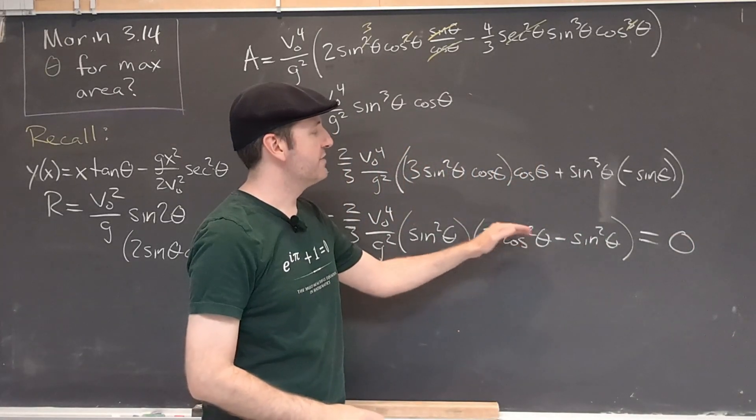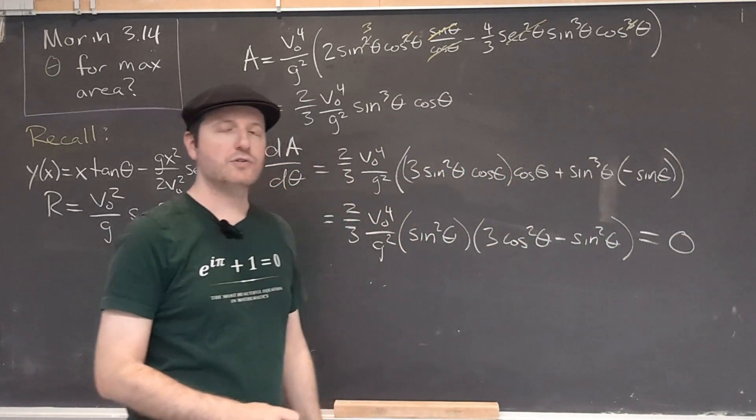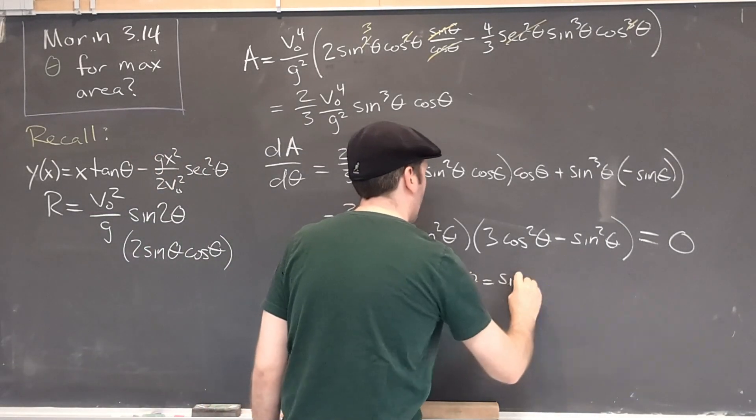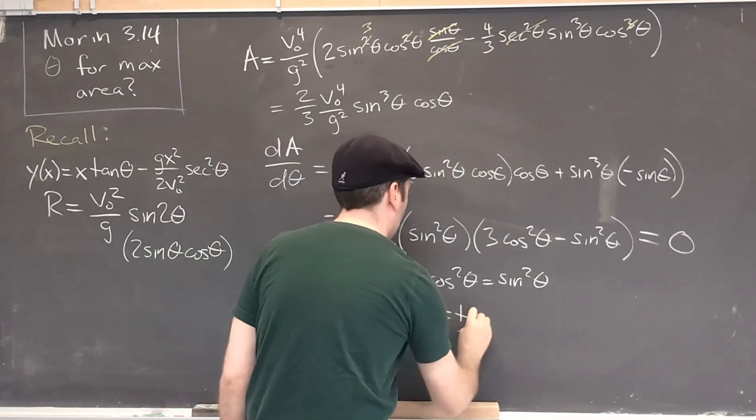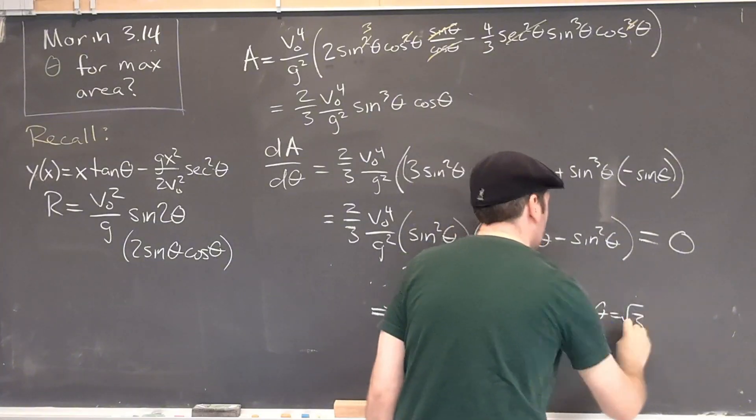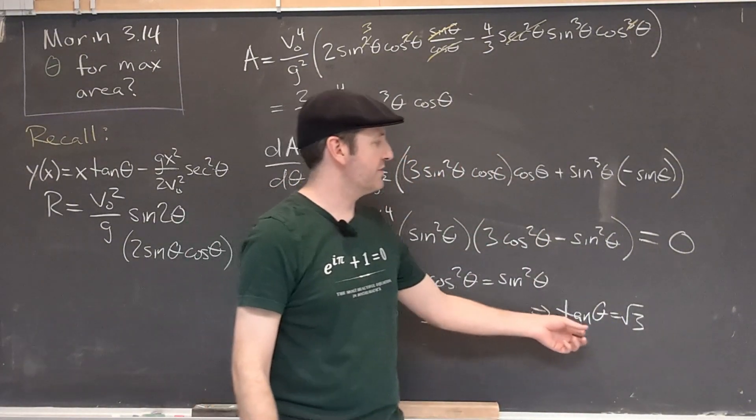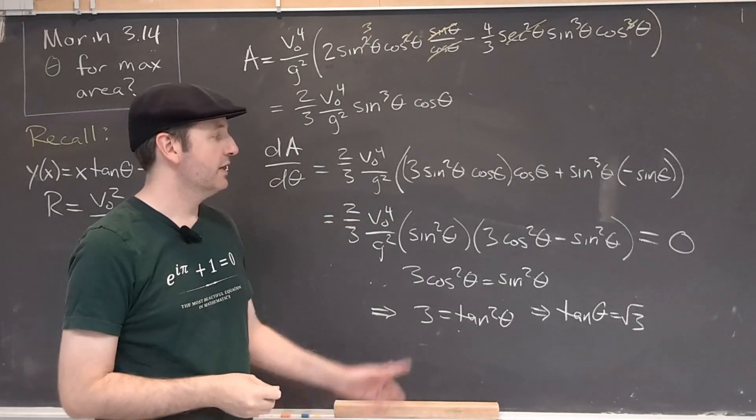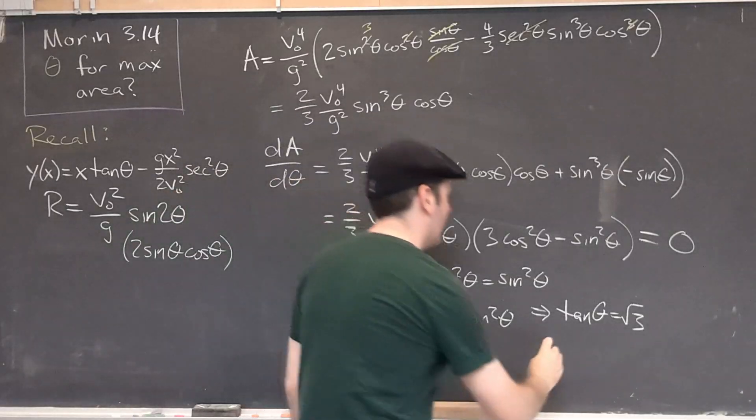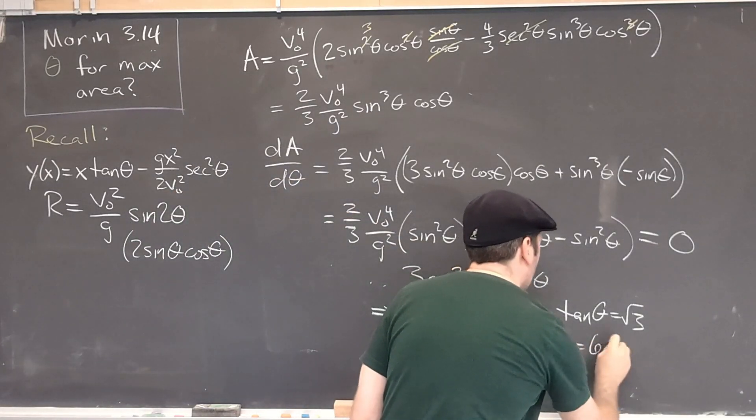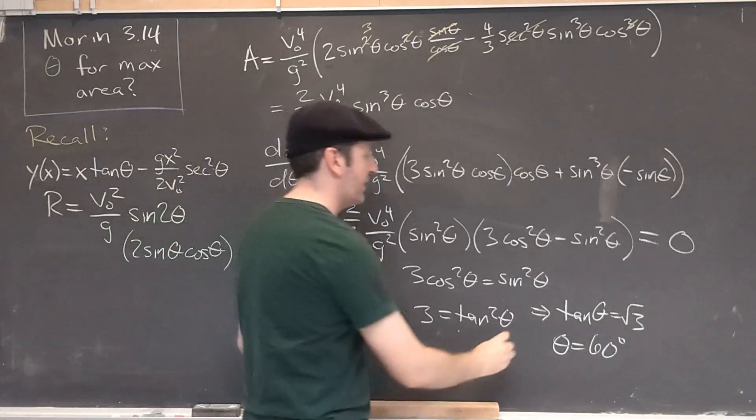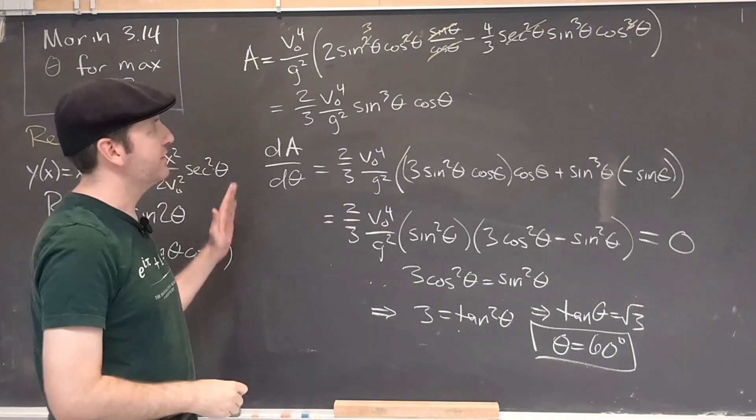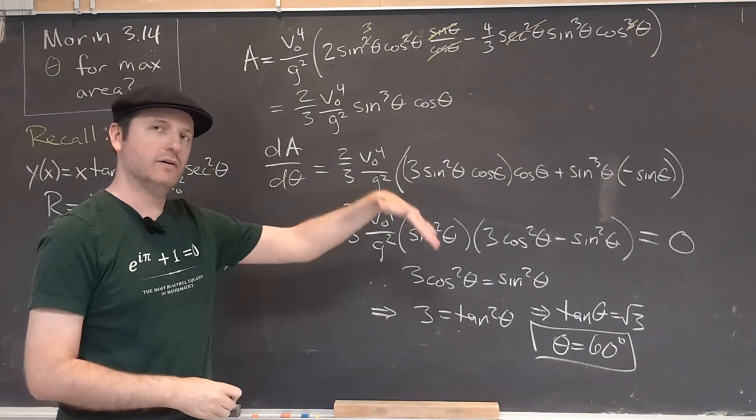Setting this equal to 0 and then dividing both sides by cosine squared gives us a nice equation for tangent. We need the tangent to be equal to root 3. That is actually a well-known value for the tangent function. So the arc tangent of root 3 will give us our final answer of 60 degrees. So when we launch our angle at 60 degrees, we're able to maximize the area that we find under this projectile trajectory.